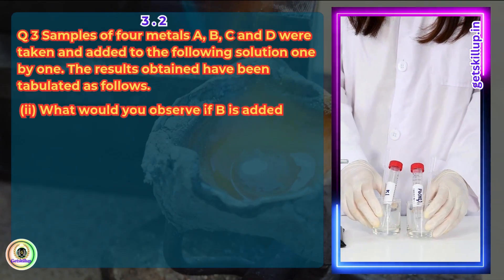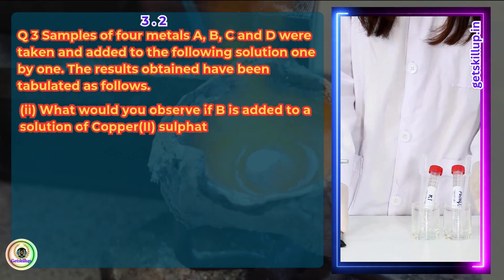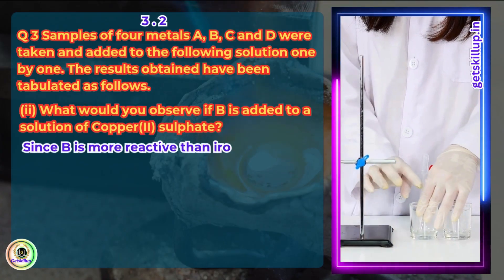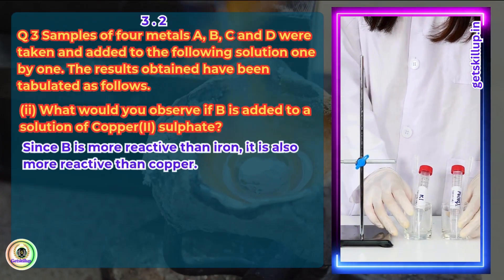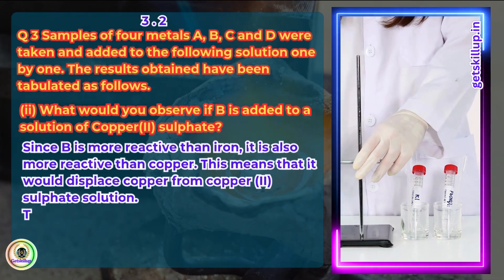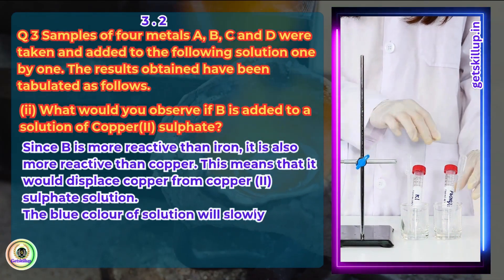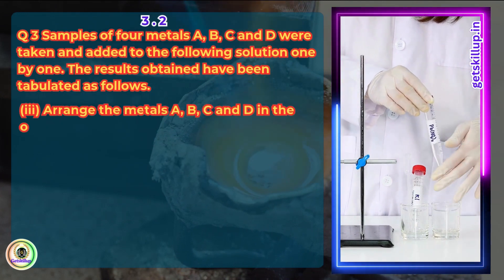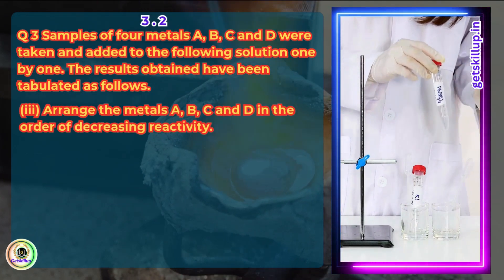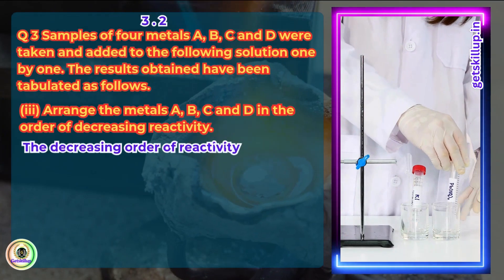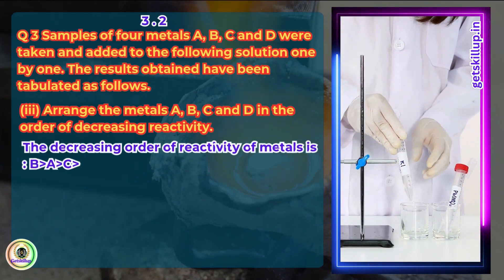What would you observe when B is added to a solution of copper sulphate? Answer: Since B is more reactive than iron, it is also more reactive than copper. This means that it would displace copper from copper sulphate solution. The blue color of the solution will slowly fade. Arrange the metals A, B, C and D in order of increasing reactivity. Answer: The decreasing order of reactivity is B > A > C > D.